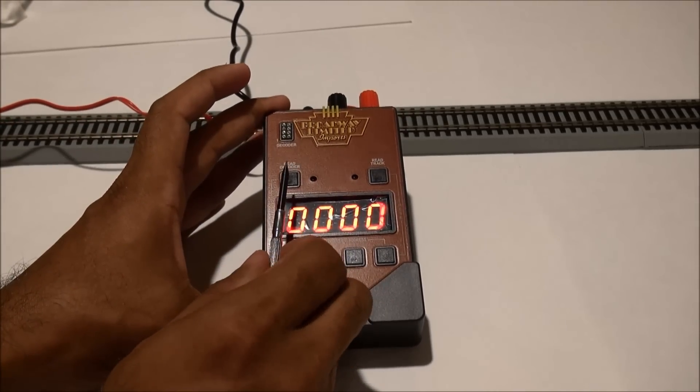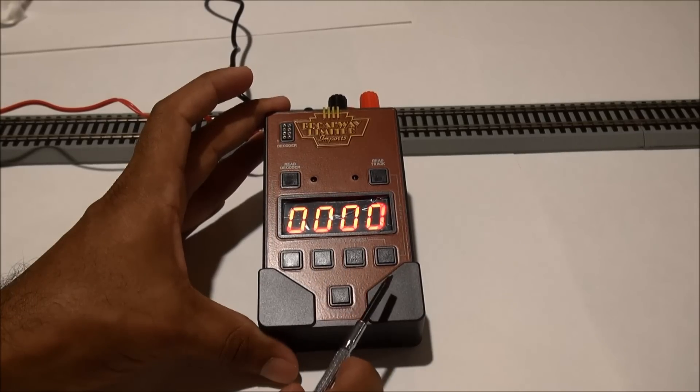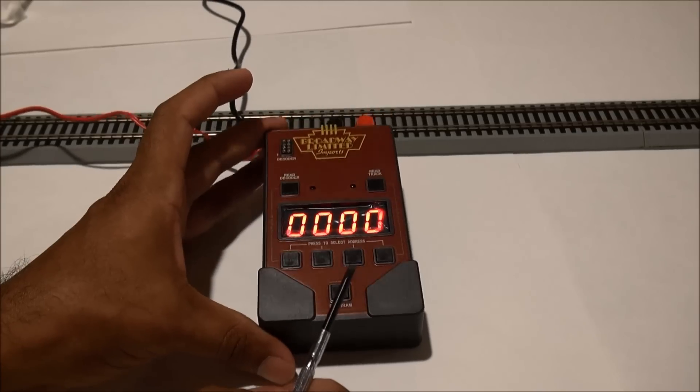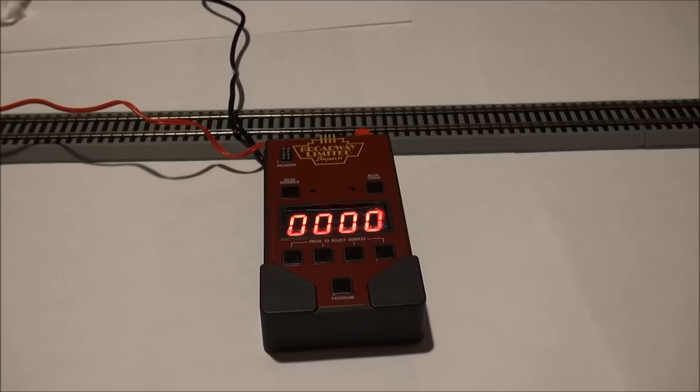Now you've got two buttons here: Read Decoder, Read Track, and then you've got the Address to change the address to what you want, and the Program button itself. Pretty simple interface and you are good to go. Now let's actually see if this works by pulling out a locomotive and seeing if we can change the address.